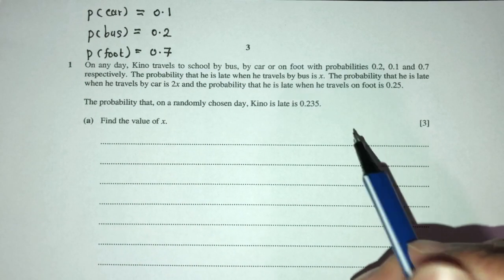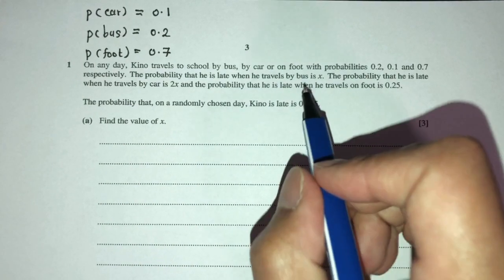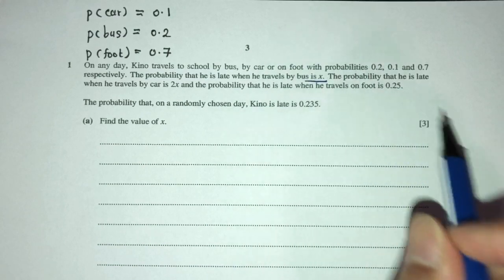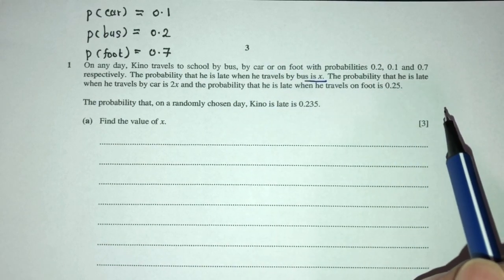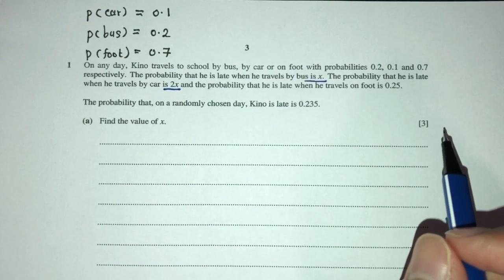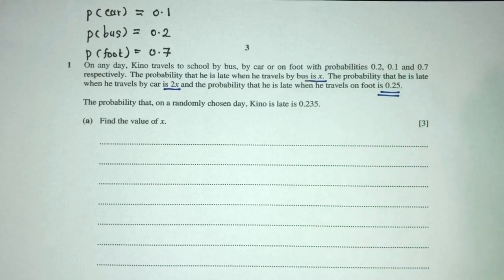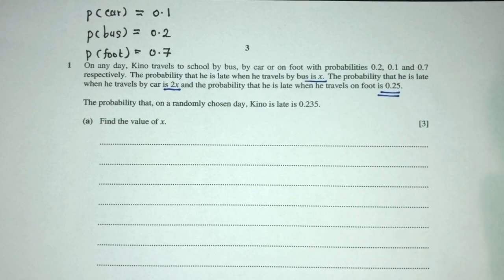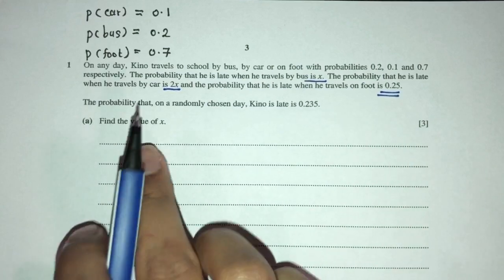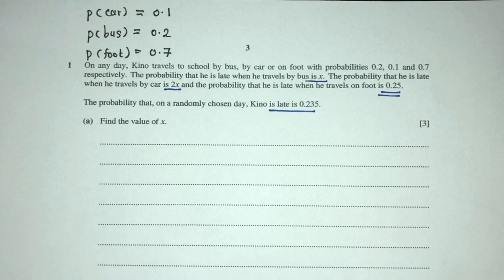Now, the chance that he is late when he travels by bus is x, the chance that he is late when he travels by car is 2x, and the chance that he is late when he travels on foot is 0.25. So we have to use these values to find the value of x eventually.